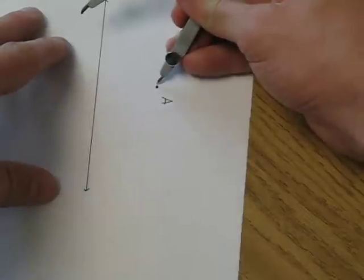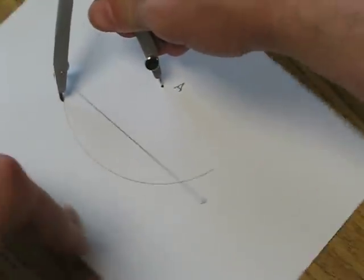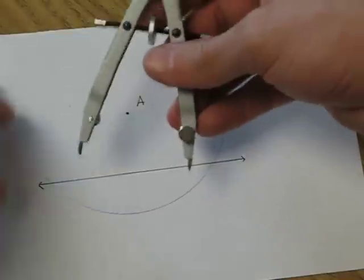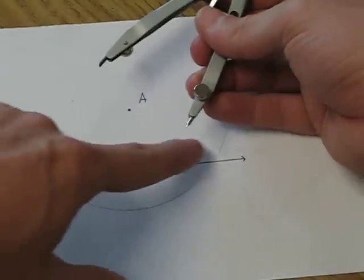Here is our arc and you see it passes through our given line twice. Now we're going to use those two points of intersection to construct two more arcs out here in the open space.